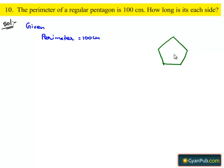Here is the regular pentagon A, B, C, D and E in which all sides are equal. We have to find the length of each side.